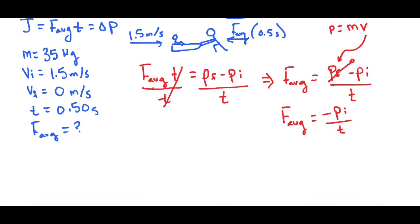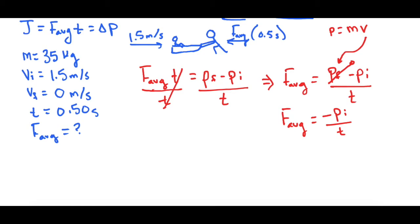Let me go ahead and slide this up. And now let's go ahead and actually plug in the numbers. So we have F average is equal to negative 35 kilograms times initial velocity is 1.5 meters per second divided by the change in time, which they tell us is 0.50 seconds.